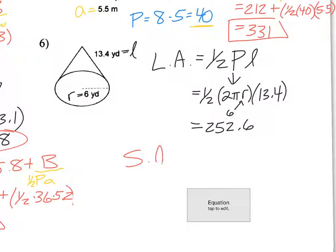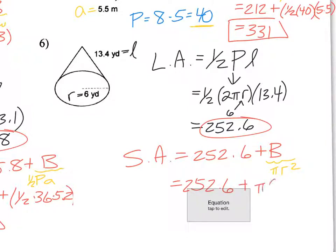So there's lateral area. So again, surface area is that number plus big B. Now big B here is the area of the circle. Area of the circle is πR². That's the formula. So I have 252.6 plus π times 6 squared. So again, you're going to use pi button on your calculator. So 252.6 plus π times 6 squared. If I do all that together, then I got 365.7. So I know it's quite a bit there, but you've got to remember chapter 11 to do chapter 12 stuff here.